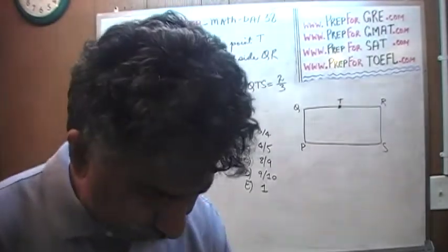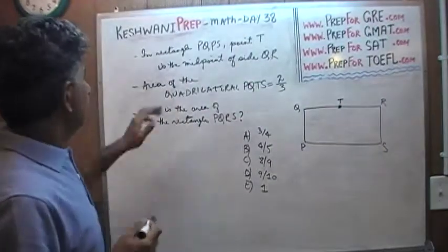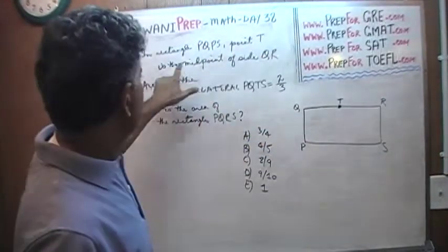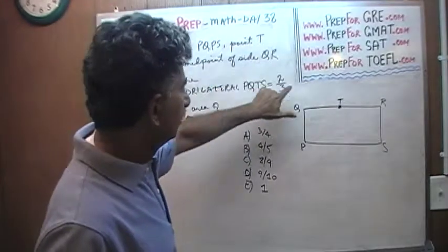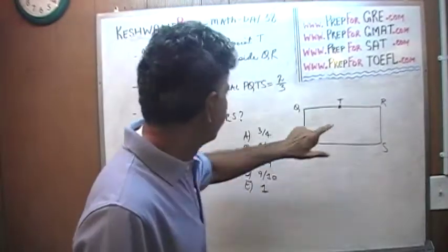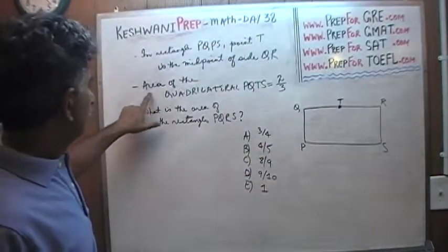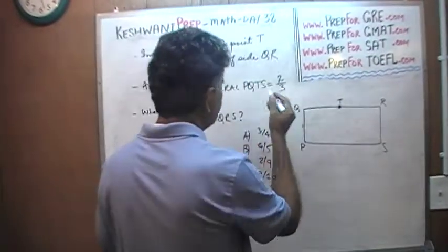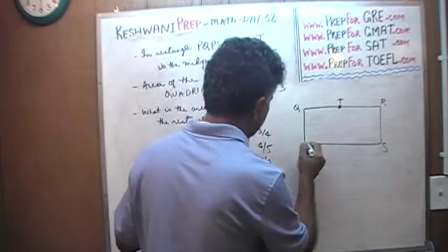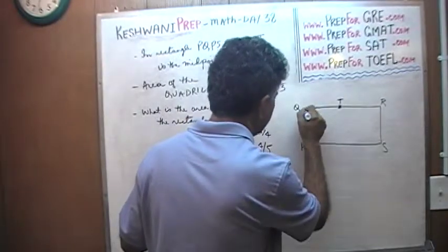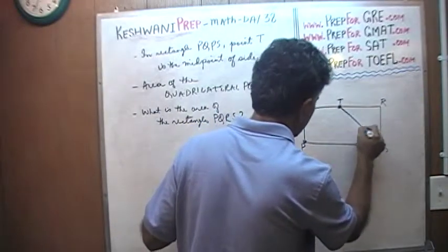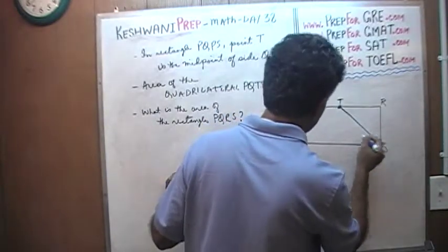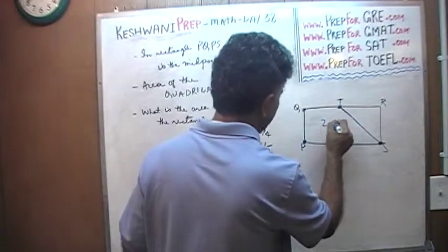Again, one more time I'm going to read it to you. In the rectangle PQRS, point T is the midpoint of the side QR. QR is the midpoint. We are told that the area of the quadrilateral PQTS is two-thirds.